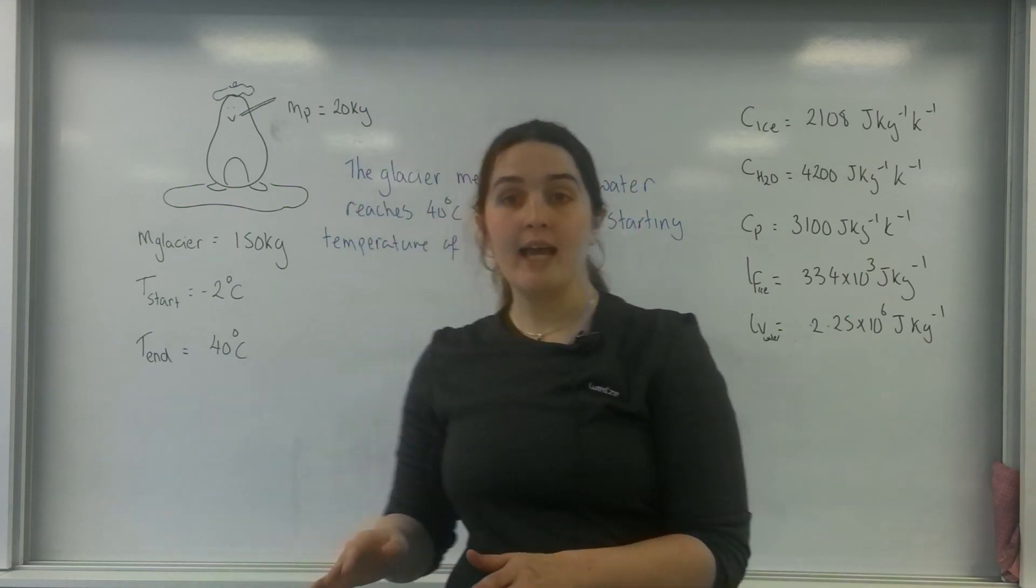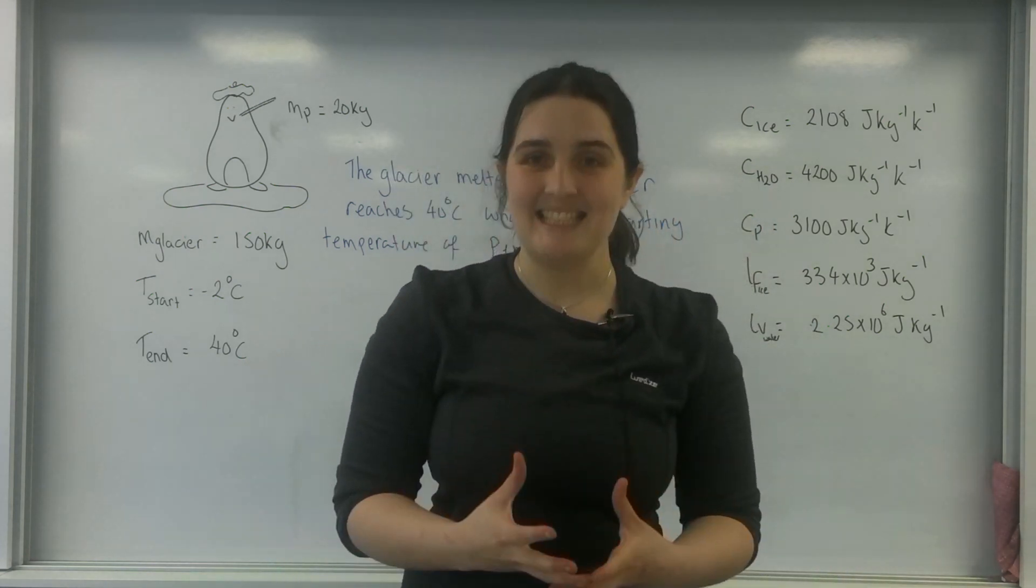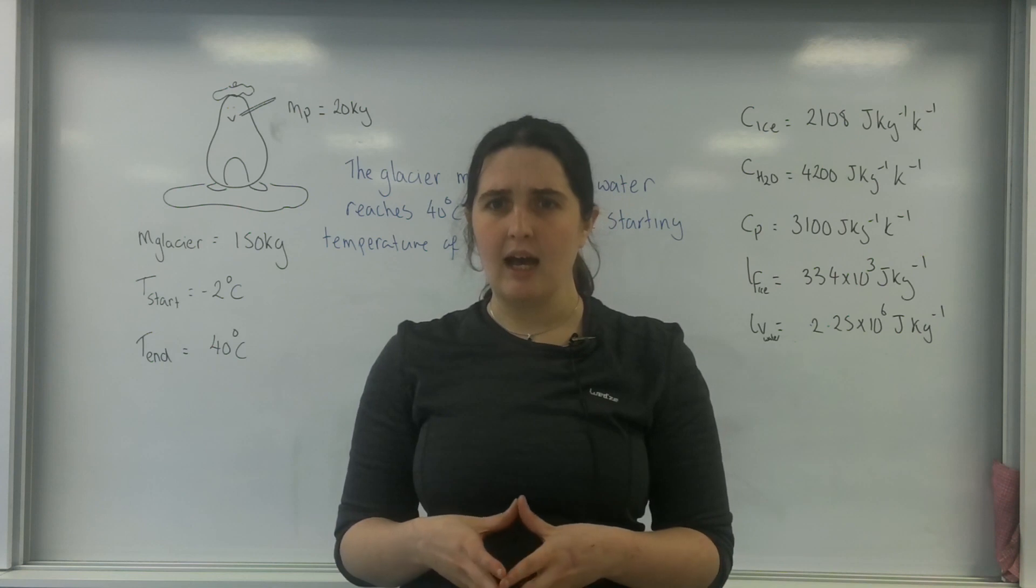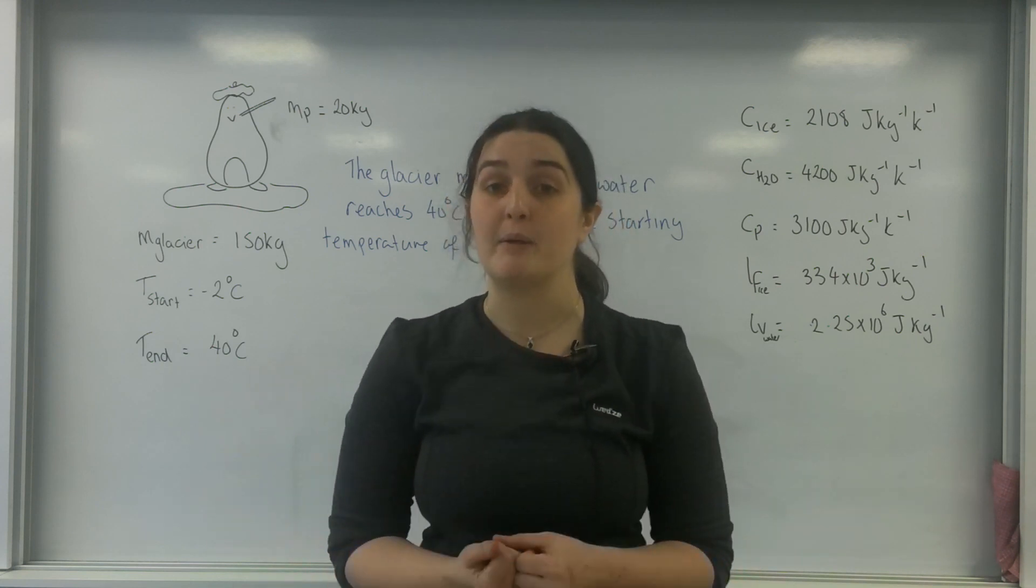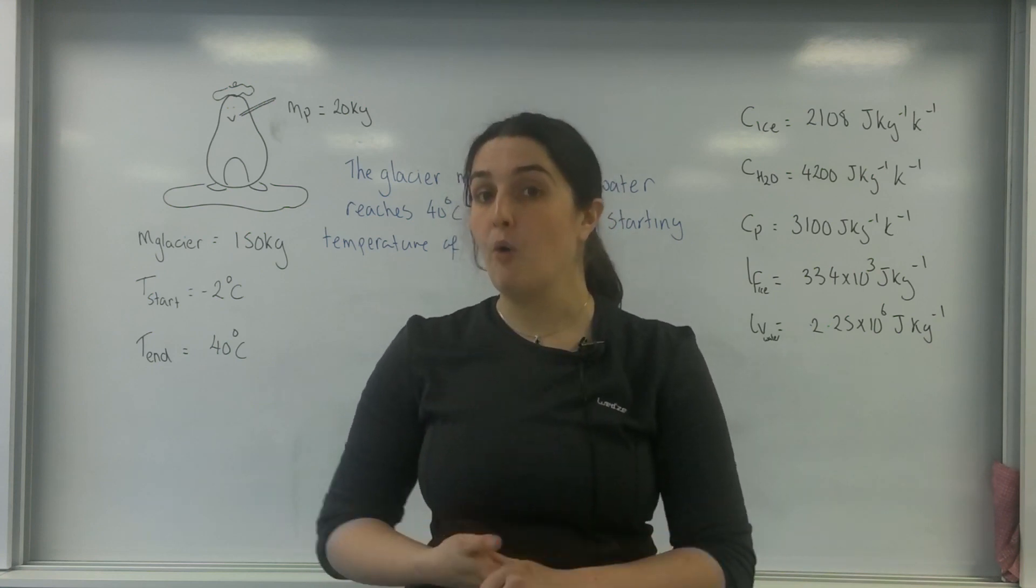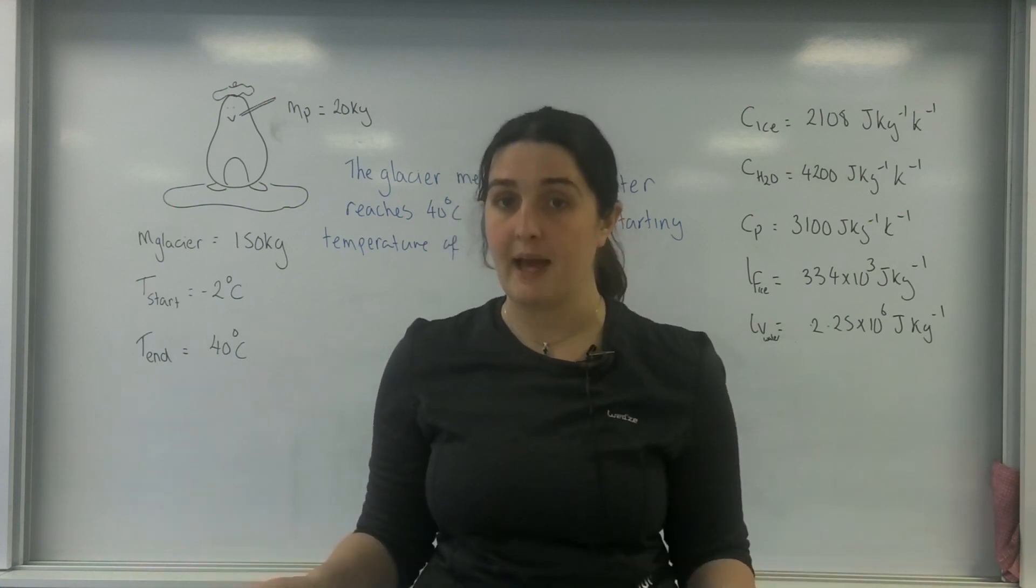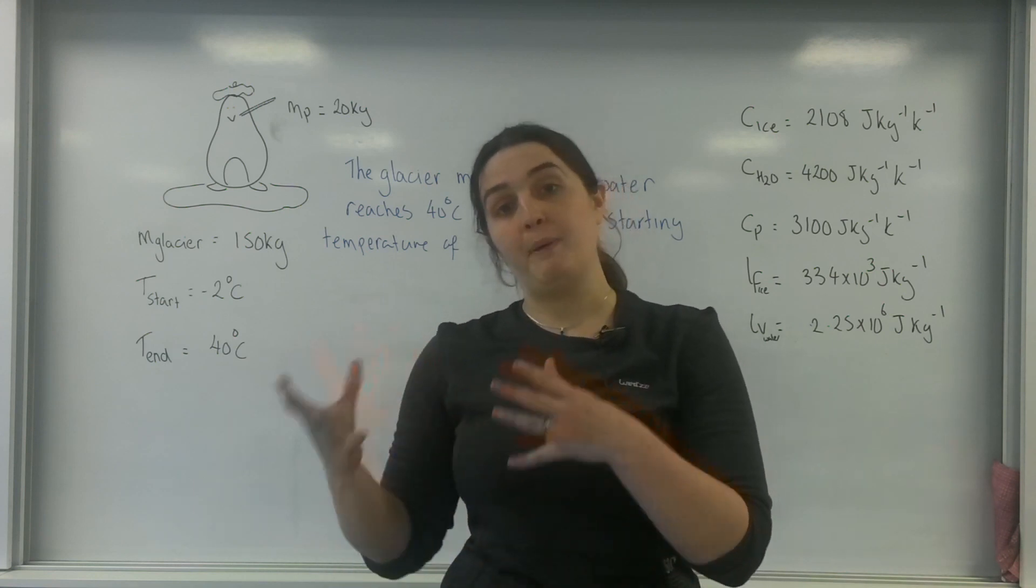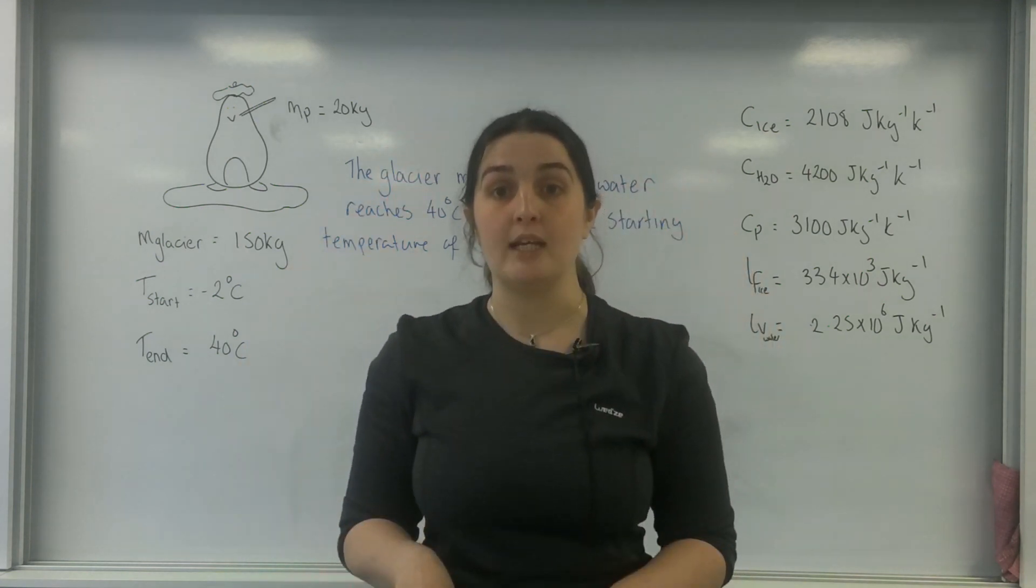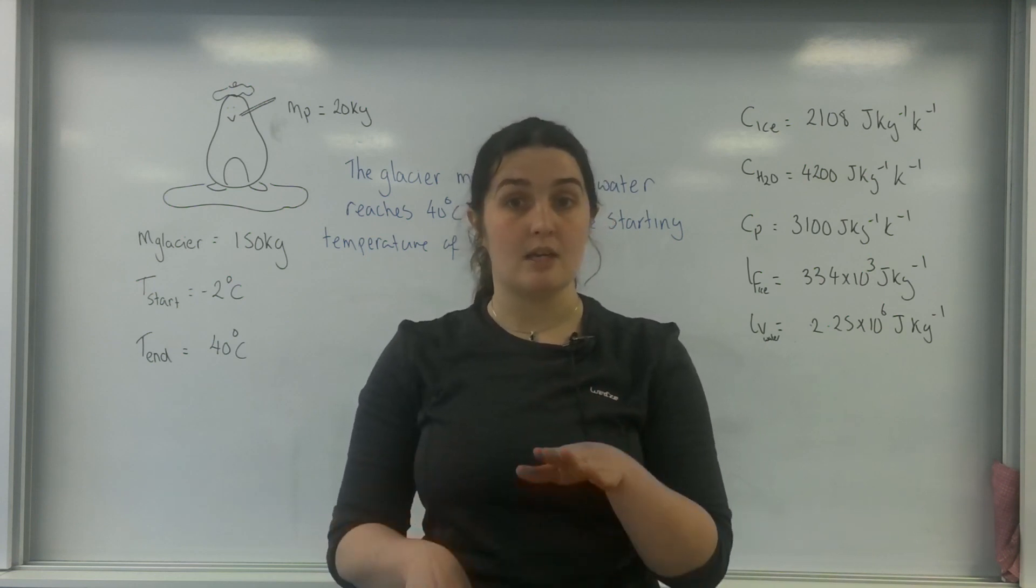So what I've got here is a penguin and this penguin's got a temperature and it's going to sit on a glacier. Now this glacier started at minus two degrees C and it melted, and finally when it reached what we call thermal equilibrium, the maximum temperature it reached was 40 degrees C. I am assuming that all the energy is transferred 100%, there's no inefficiencies, no heat loss, anything like that. So what's actually happened is the penguin has got a fever and he sits on the glacier to cool down. The penguin is going to lose energy and the glacier is going to gain, and the maximum temperature they're going to reach is this thermal equilibrium.